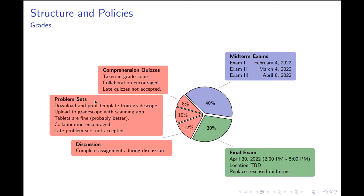Every topic also has a problem set associated with it, found in Gradescope, but you're expected to do these on pen and paper. First, download and print the template from Gradescope, write your solutions in the template, and upload to Gradescope using a scanning app — not just a picture, because pictures don't render well, while scanning apps convert to PDFs nicely. If you have a tablet and are comfortable using it, that works well too. Collaboration on problem sets is very much encouraged, but late problem sets are not accepted — the deadline is 10pm every Tuesday. Problem sets are 10% of your grade.